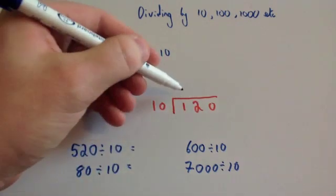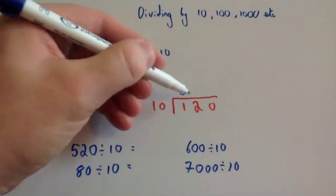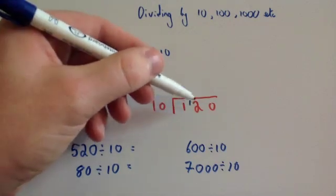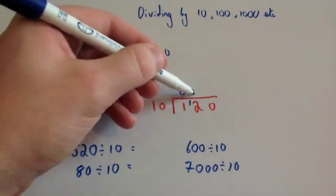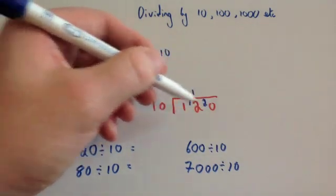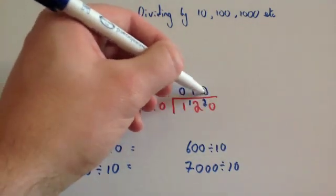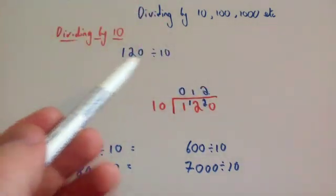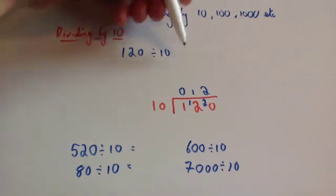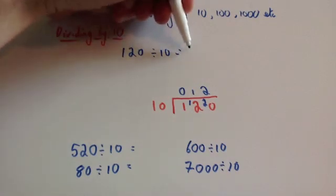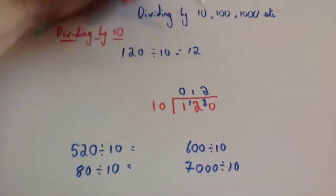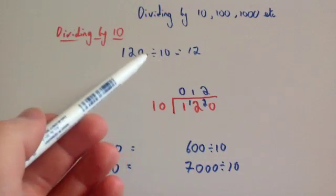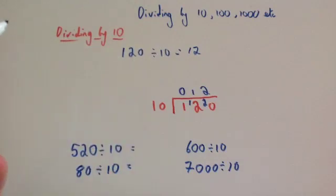So 10 into 1 doesn't go, remainder 1. 10 into 12 goes once, remainder 2. And 10 into 20 goes 2 times. Notice that whenever you do 120 divided by 10, you get an answer of 12. So you've made 120 ten times smaller and you've got 12.